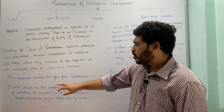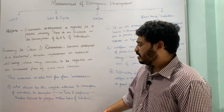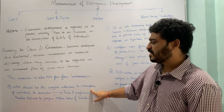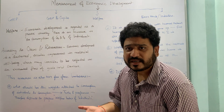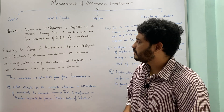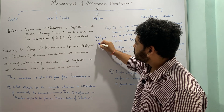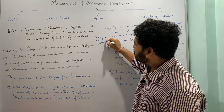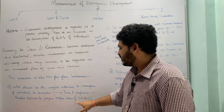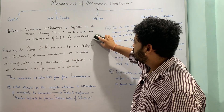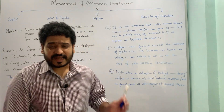The first limitation is: what weights should be attached to the consumption of individuals? This is a problem because consumption depends upon tastes and preferences, and therefore it is difficult to prepare a welfare index of individuals. For example, what weights should be assigned to consumption of food, non-food items, or intoxicants? There is a big problem in using welfare as a measure of economic development.